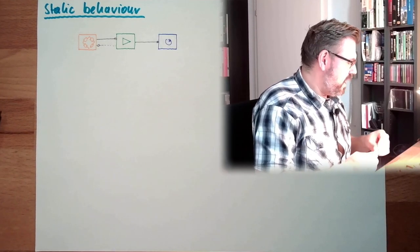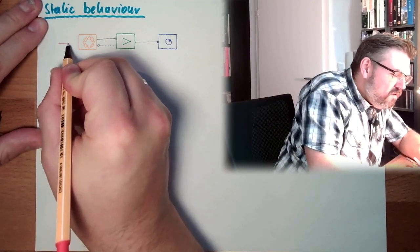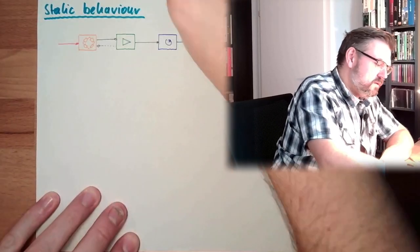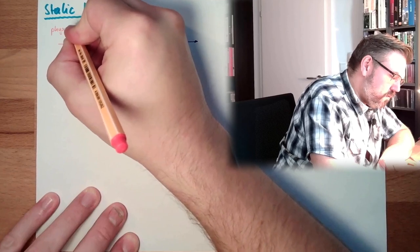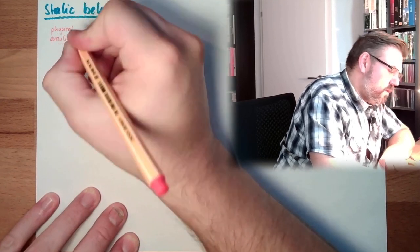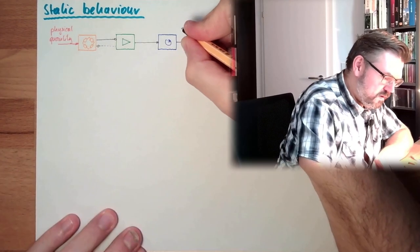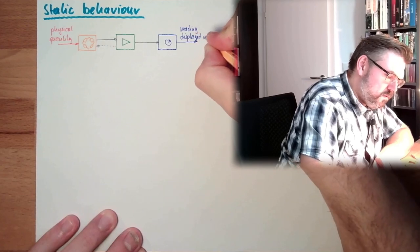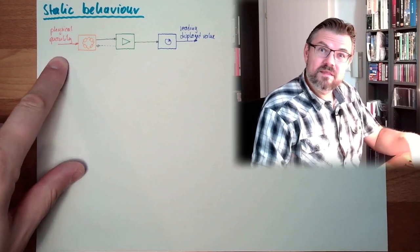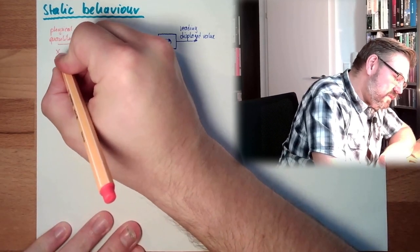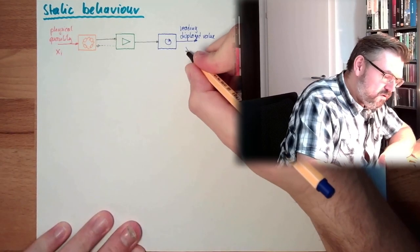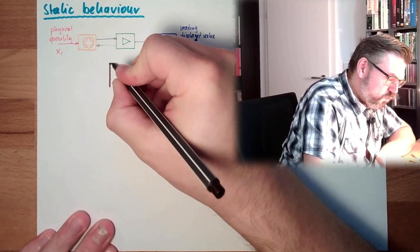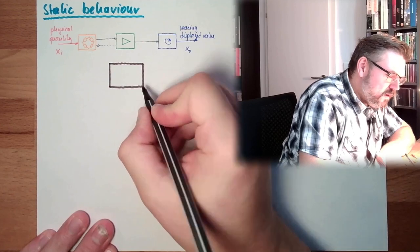What we have is a physical quantity influencing the sensor, and here we have a reading — the measurement, the displayed value. This is the physical quantity as input, and here we have the reading as output. So this is the input to my measurement system, XI, and this is my output, XO — what I get out of the measurement system.